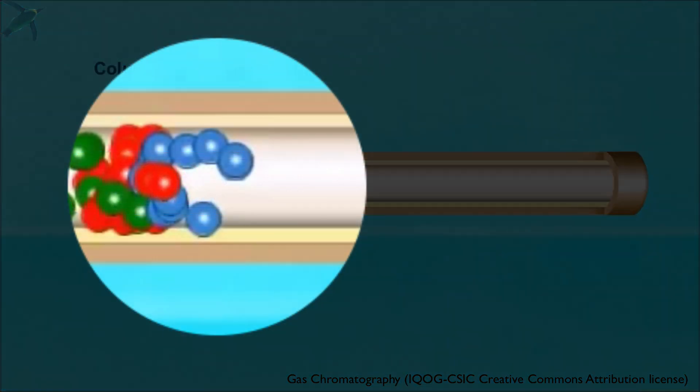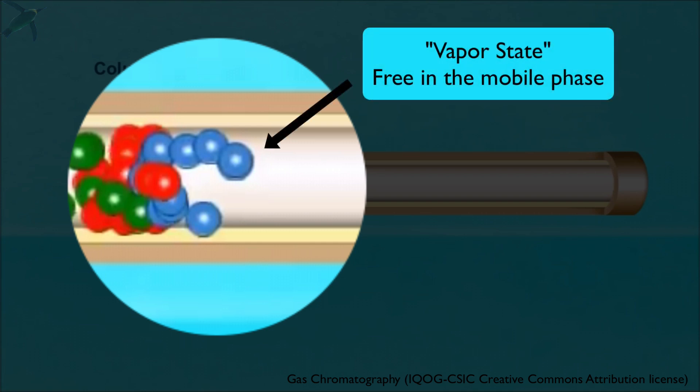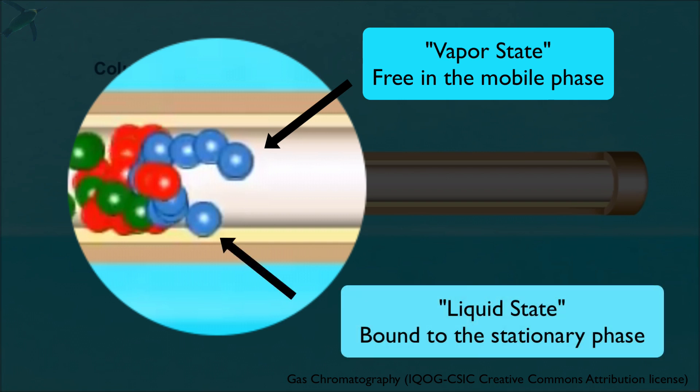While in the column, each component is in equilibrium between two states: vapor, where the molecules are in the mobile phase and are free to travel down the column, and liquid, where the molecules are bound to the stationary phase and stuck to the column.